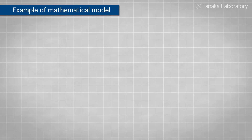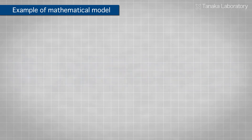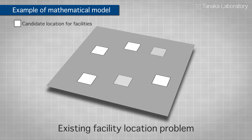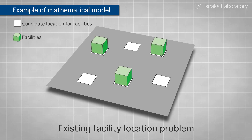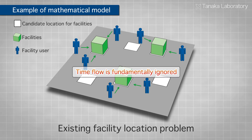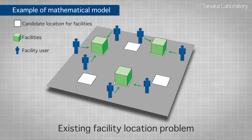As specific examples of mathematical models, there are facility location problems, which decide the location of facilities in a city. Conventionally, facility location problems have been formulated as spatial optimization problems by incorporating population and distance data of the target city. They determine the ideal location of facilities, but fundamentally do not take into consideration the flow of time.